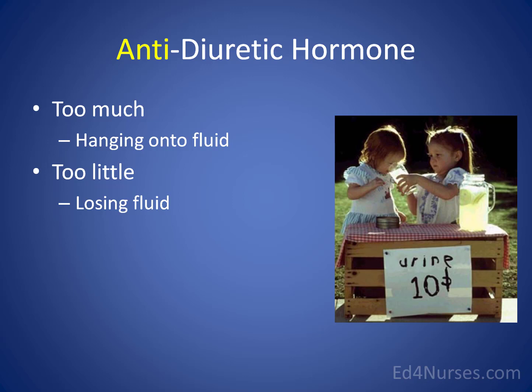If a patient has too much antidiuretic hormone, the patient is going to hang onto fluid — they are not diuresing. With too little antidiuretic hormone, the patient will be losing fluid and diuresing excessively.